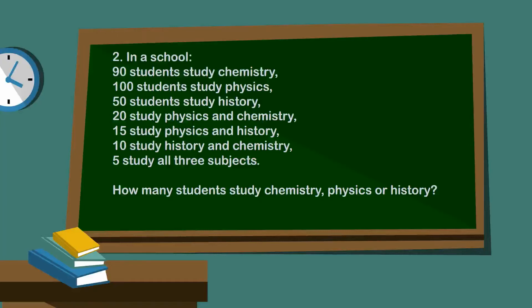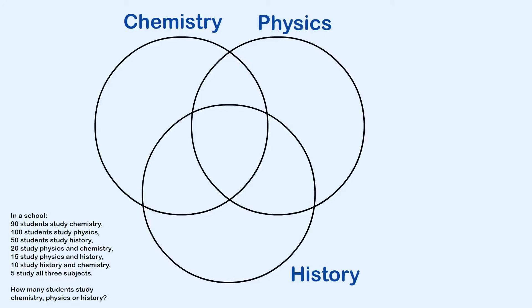So you can do this using a Venn diagram. Again, draw your three circles and work from the inside out. We know that five students study all three subjects, so we'll put that in the middle. Now, if I direct your attention to this area here, the intersection between chemistry and physics. We know that 20 students study physics and chemistry, and five we're already put here, so we have to put 15 here.